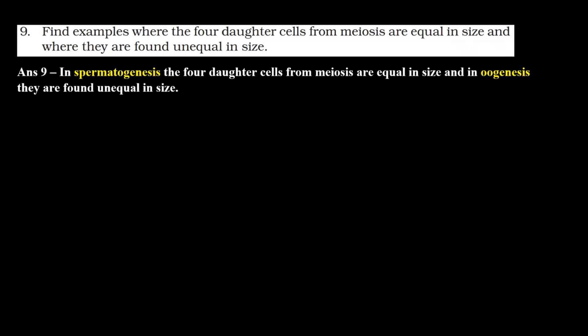So this is the best example of spermatogenesis and oogenesis. Spermatogenesis is sperm formation and oogenesis is ovum formation. So in humans, in males, spermatogenesis, it is meiosis. We know that meiosis is in germ cells so that it can be gamete formation. So in males, in spermatogenesis, the daughter cells are equal in size.